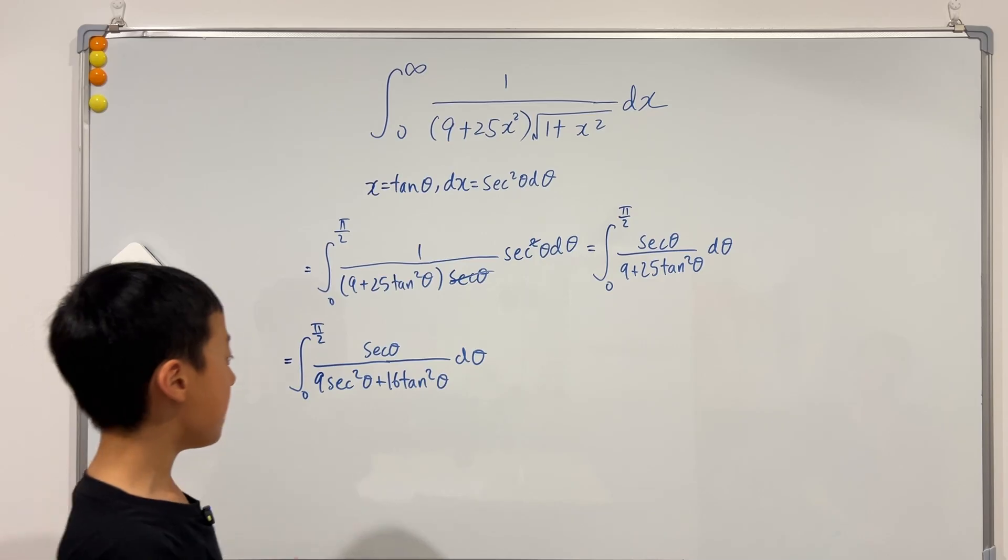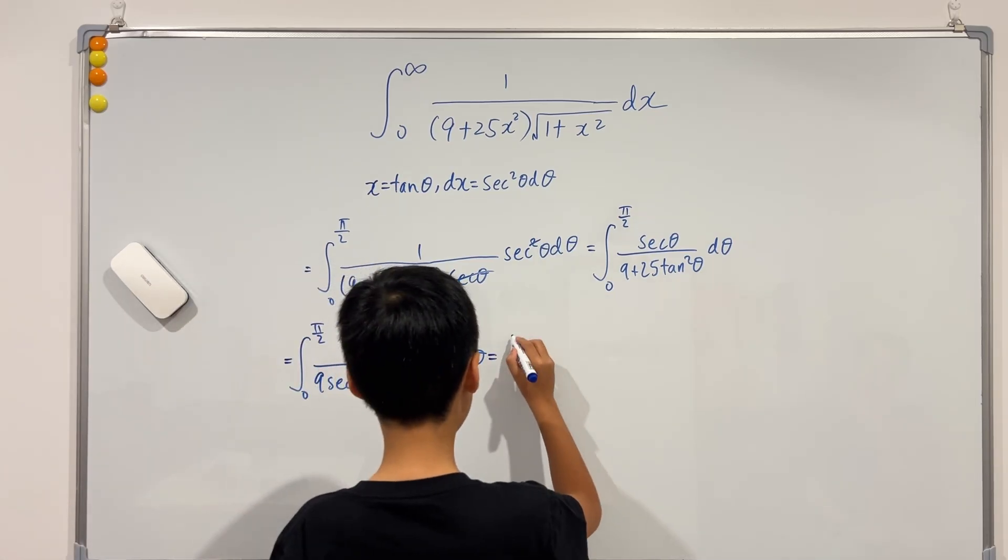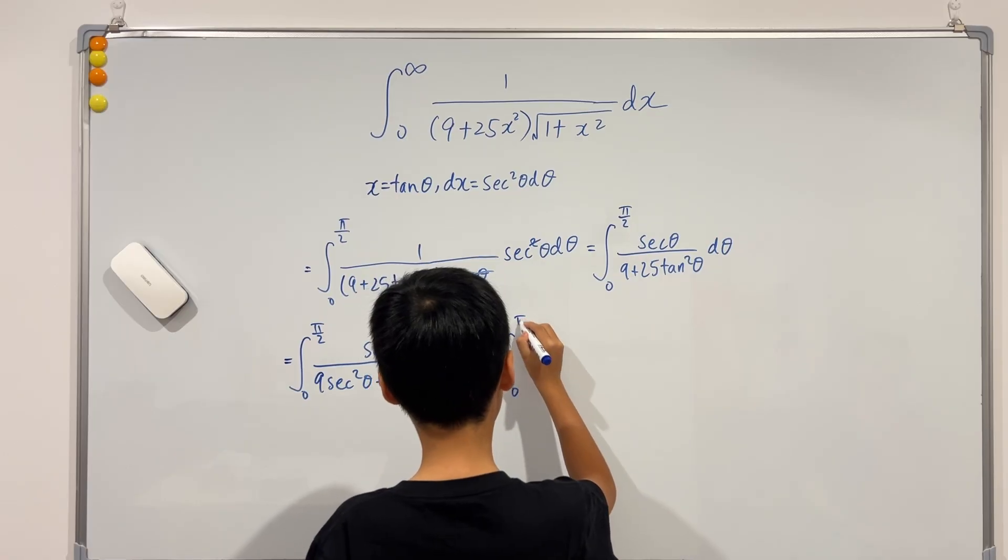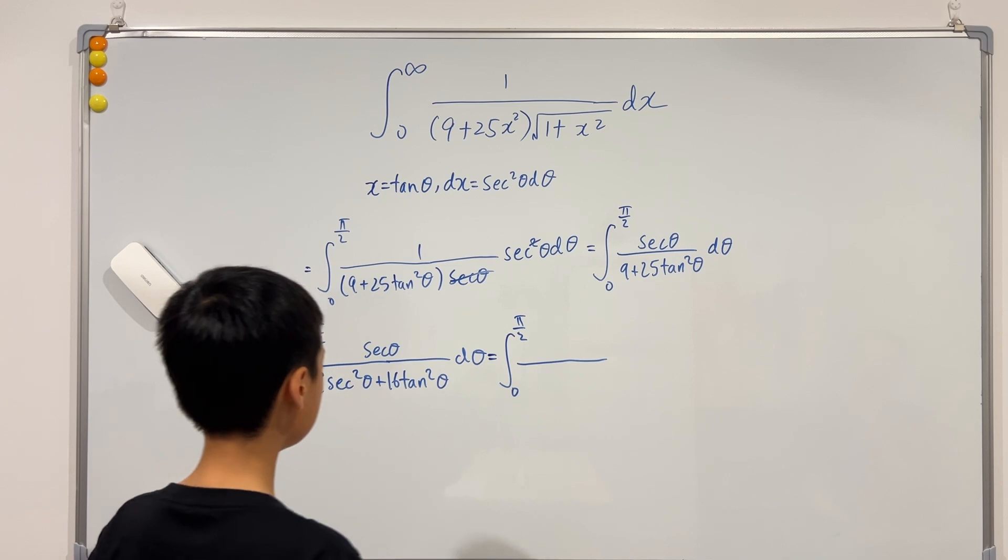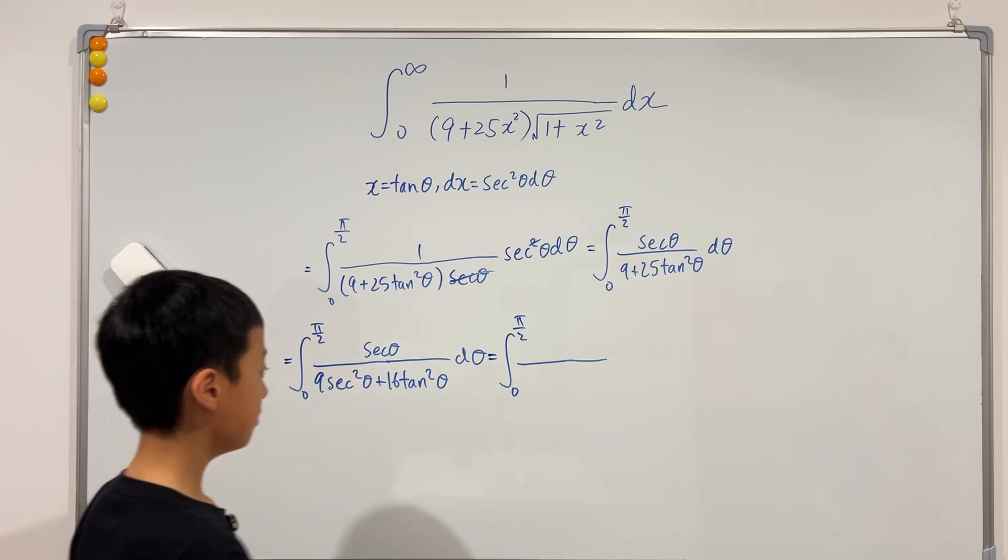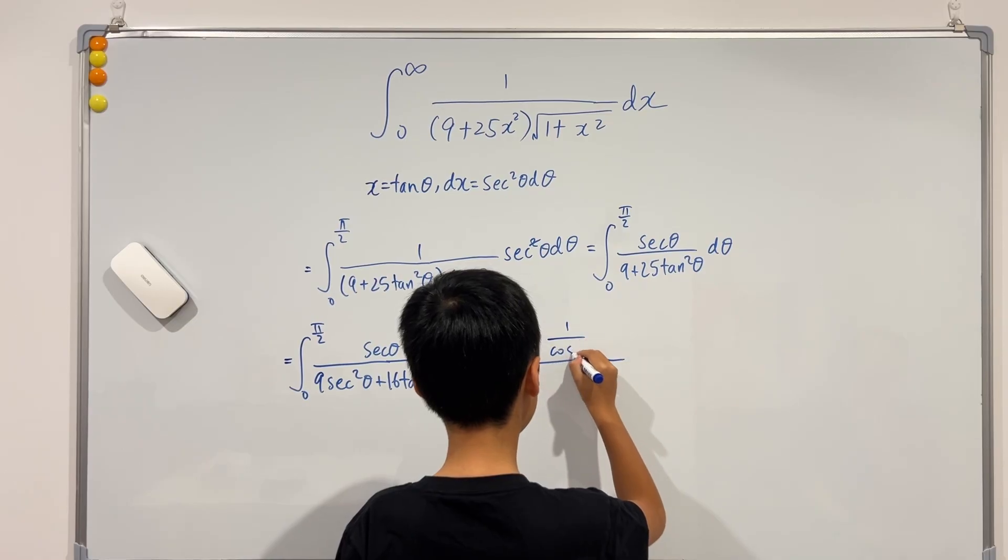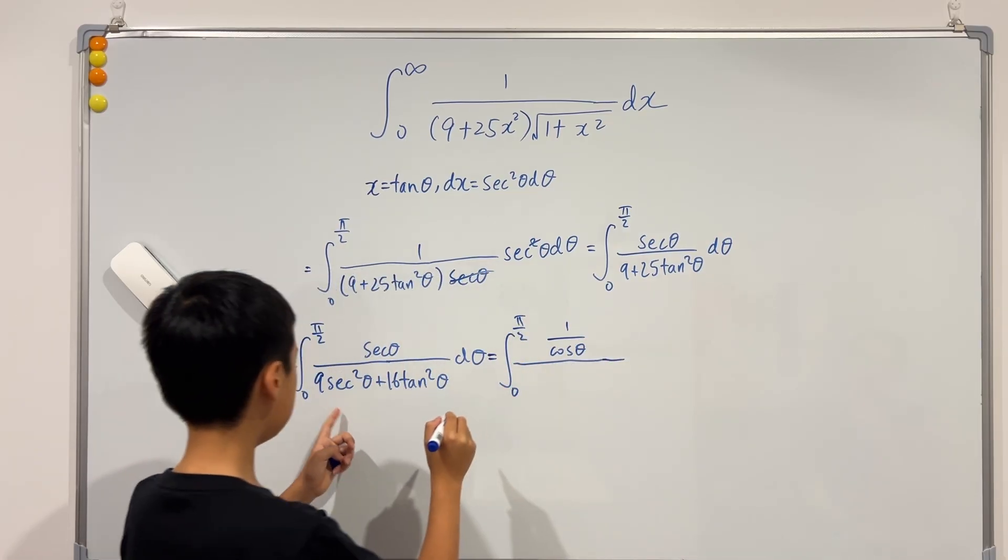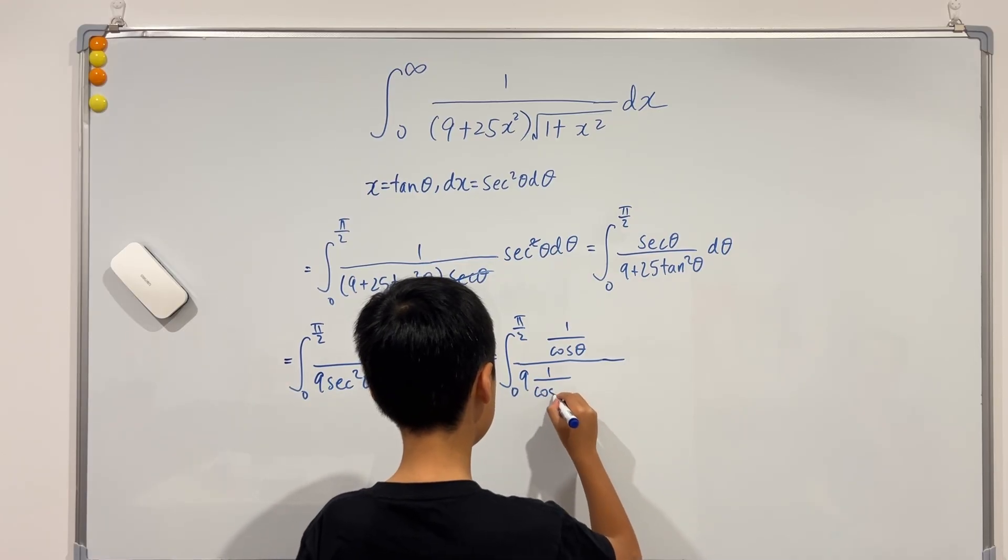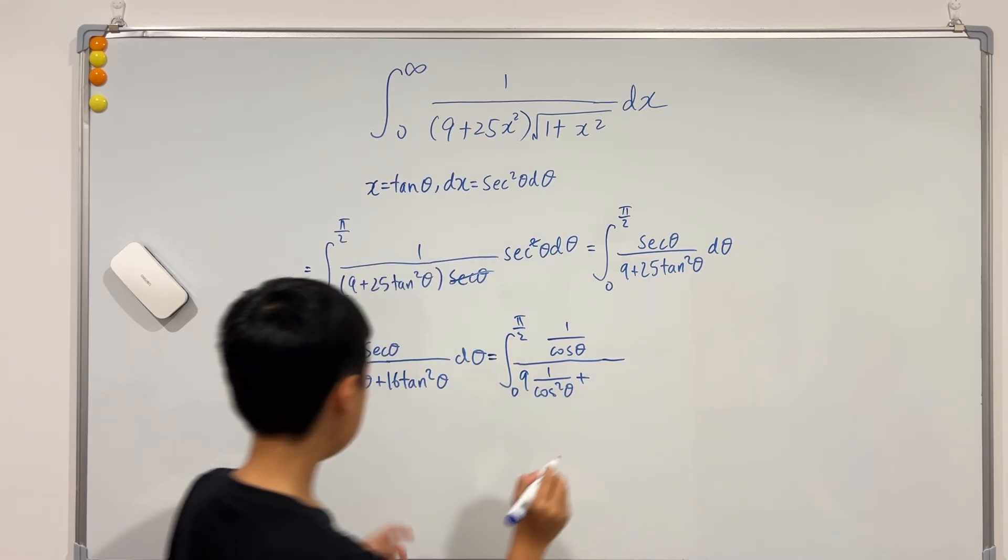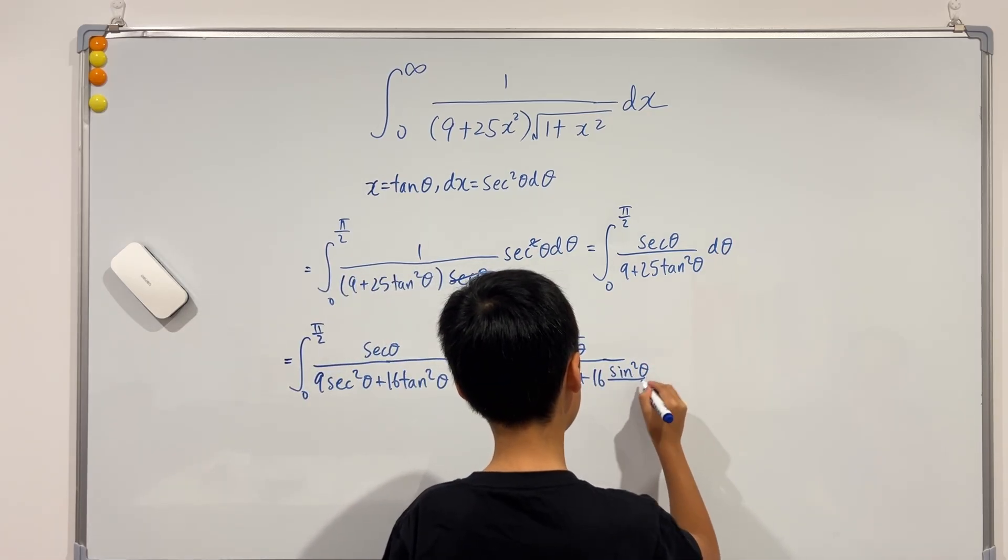And now if we write everything in terms of sine and cosine, this is just 1 over cosine. And this will be 9 times 1 over cosine squared. And this is 16 times sine squared over cosine squared.